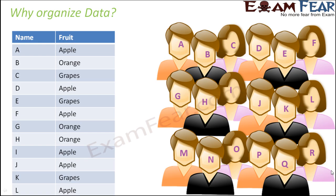What do you see on the screen? You can see a bunch of people, a group of people, a lot of people. Now, we have, just for the sake of convenience, named them as A, B, C, D, E, F and so on. There was a survey conducted to know which is the favorite fruit of each one of them. Now, some of them told apples, some told oranges, some told grapes — different people have different choices.